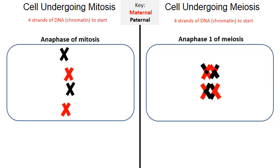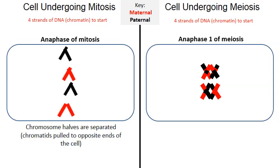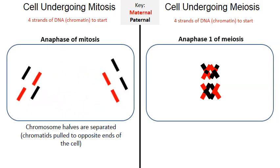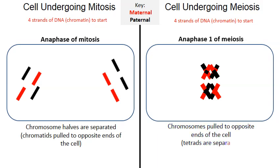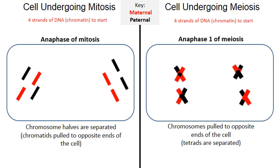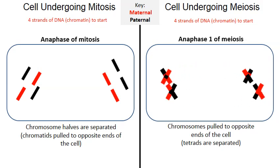As we move into anaphase of mitosis on the left, the spindle fibers engage in a tug-of-war where they pull on the chromosomes so that the actual chromatids are pulled to opposite ends of the cell. On the right-hand side in anaphase one of meiosis, the spindle fibers engage in a tug-of-war and actually pull apart the tetrads — one chromosome of a tetrad being pulled to the left and one being pulled to the right.